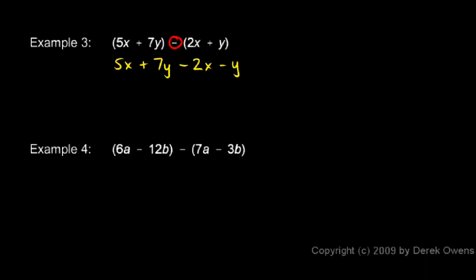You can think of this negative sign as getting distributed across these two terms. The negative sign applies to the 2x, so we get the negative 2x, and the negative sign applies to the y. So we end up with negative y.